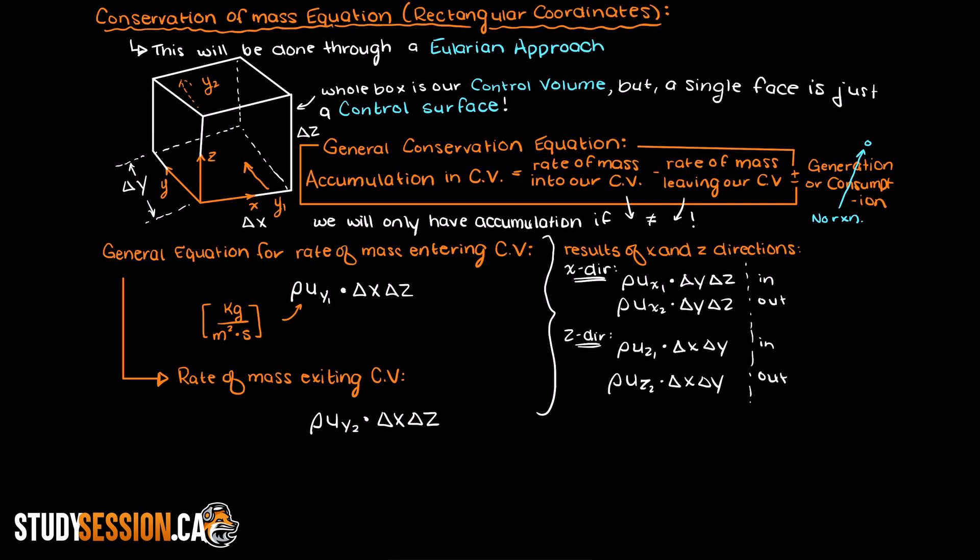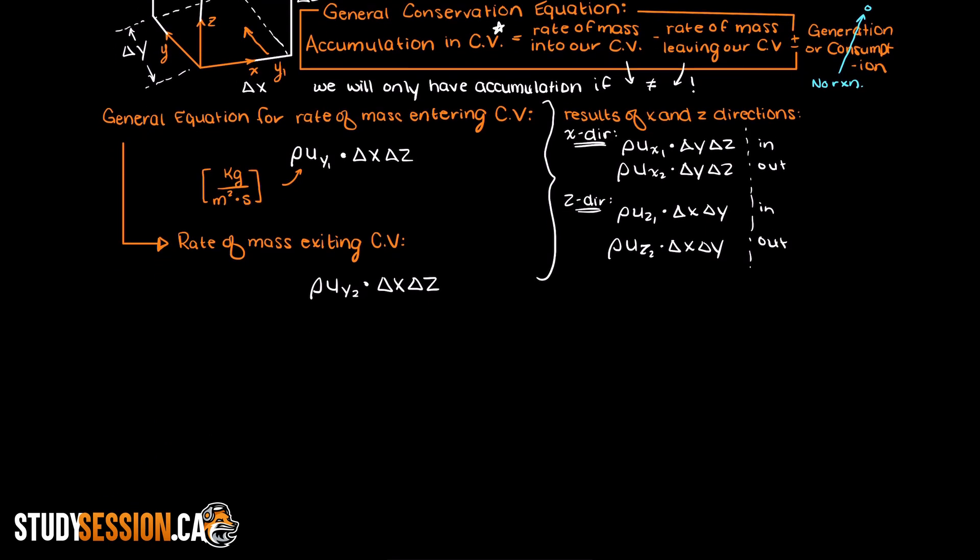So we now have general equations for the rate of mass into and out of our control volume for the x, y, and z directions. We are now only missing the general equation for the rate of accumulation before we can fully solve for the continuity equation.